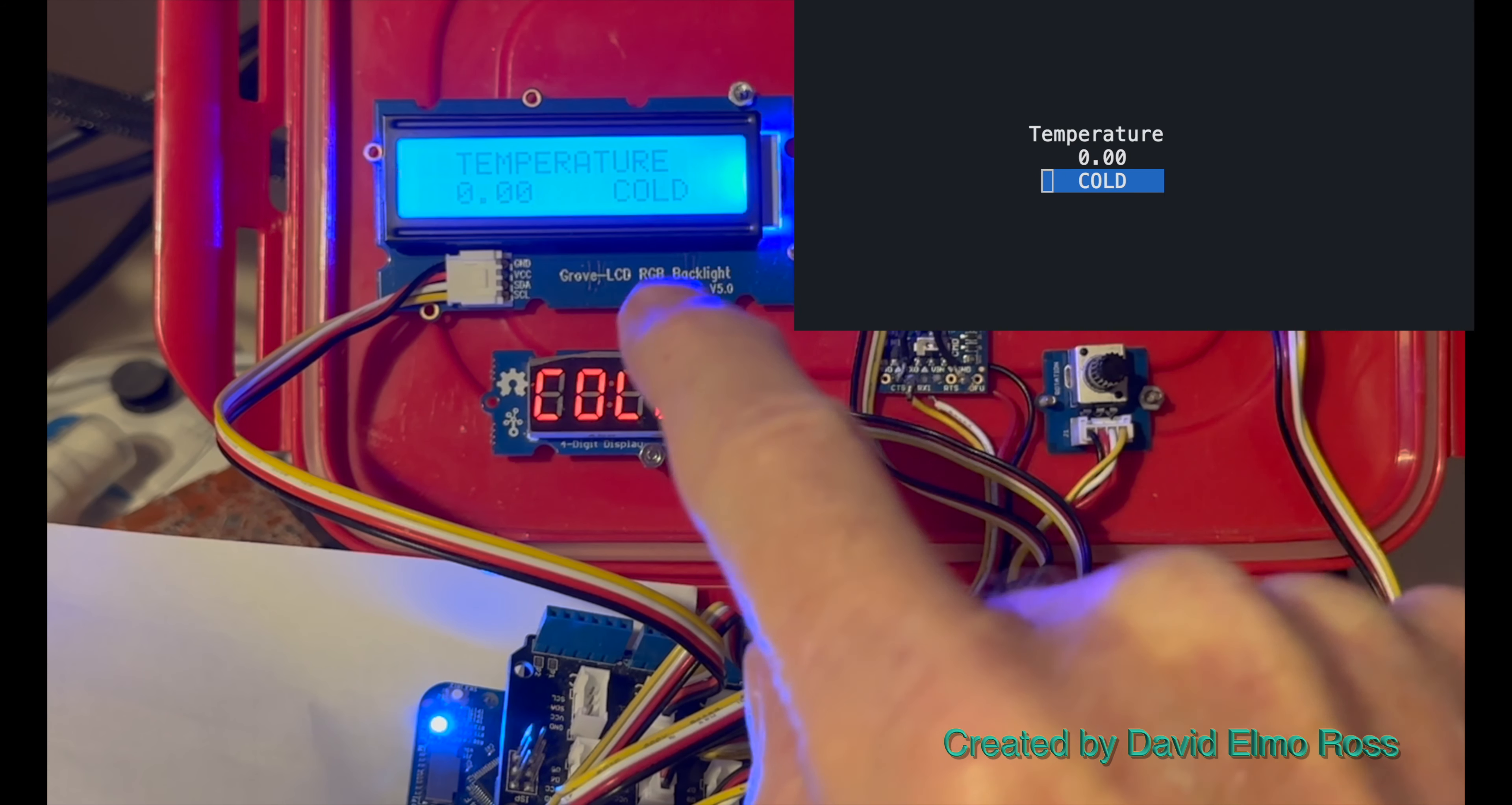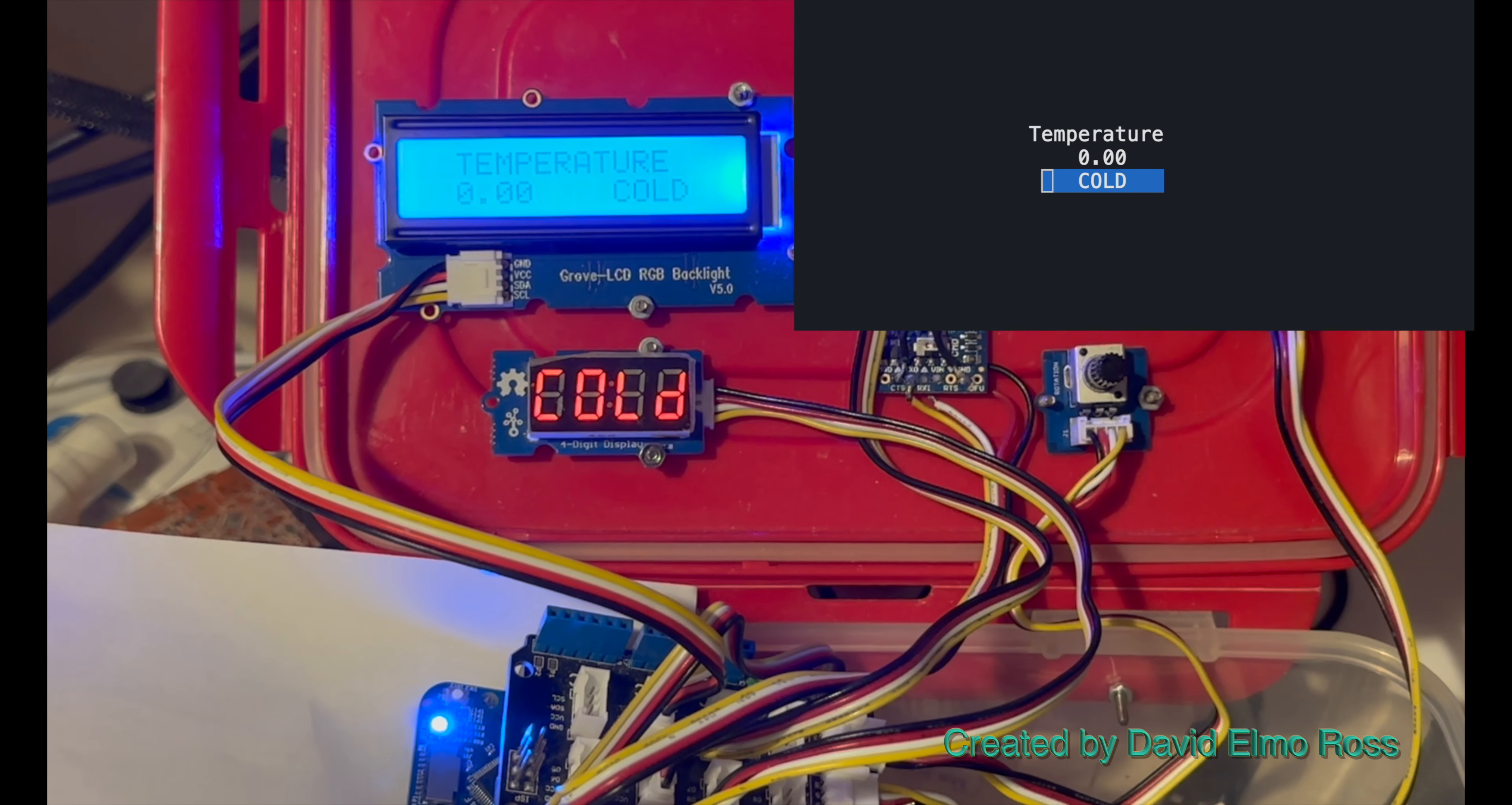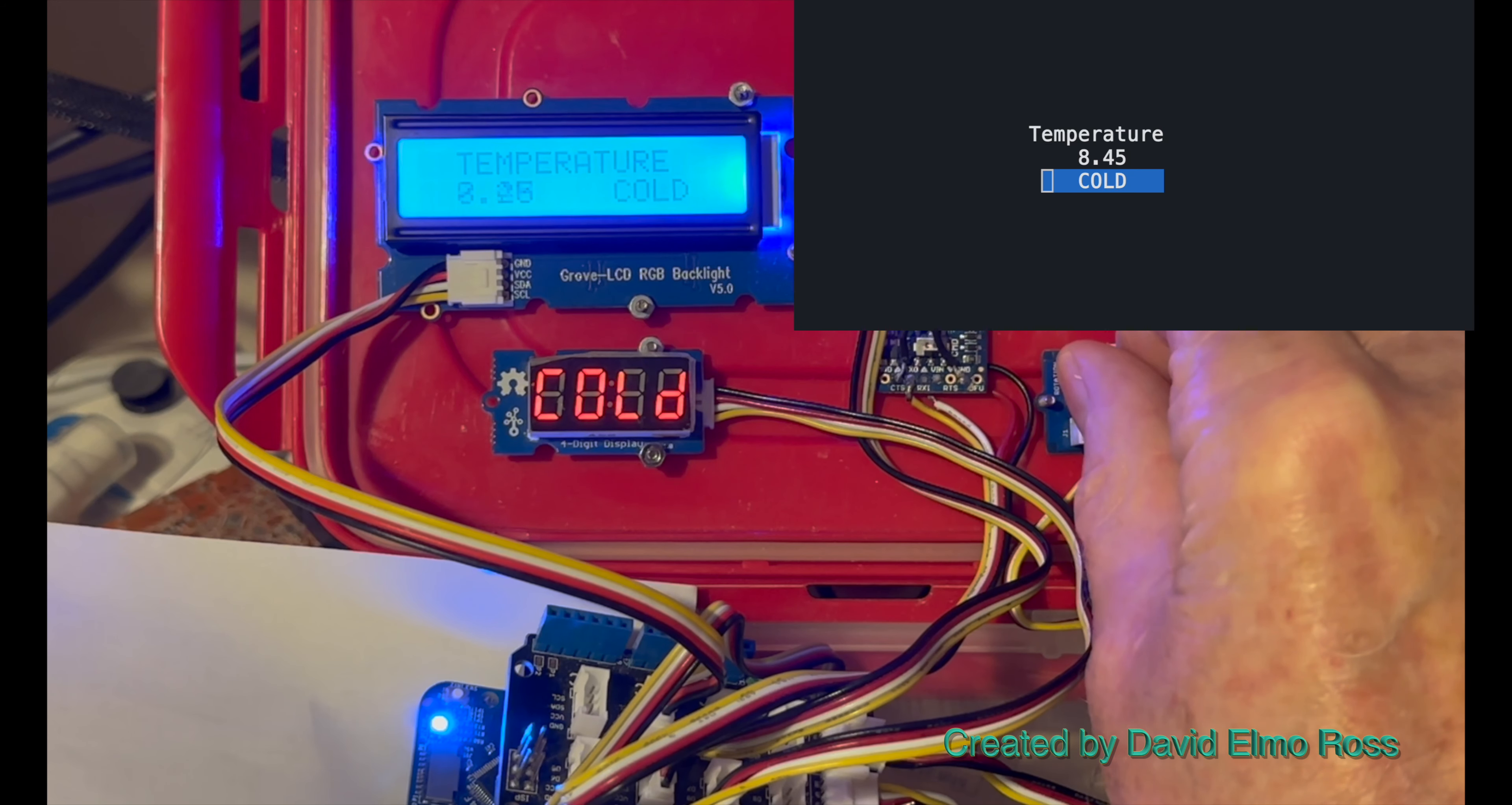What you're going to find is that for a certain temperature range from 0 to 33 degrees, it's going to show blue here, here, and on the PC screen. As we turn and simulate a voltage up to 33 degrees,